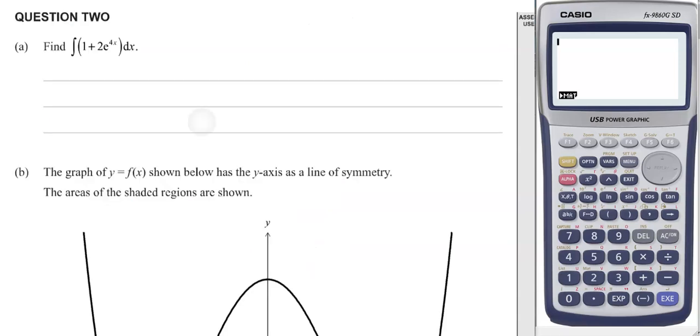Question 2 part a is very straightforward, integrate each part. We've got x and e to the 4x itself doesn't change, but we would divide through by the 4, so we get a half because that's 2 divided by 4.